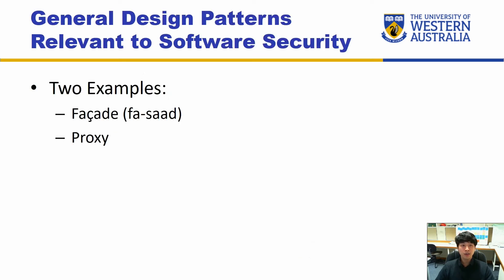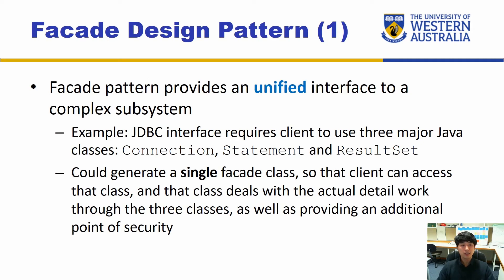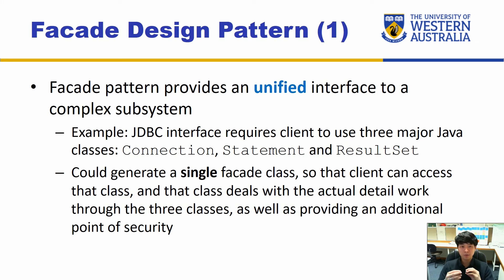With those architectural patterns in mind, we also have general design patterns that can be applied in various parts of the system. Two examples include facade and proxy. The facade design pattern provides a unified interface to a complex subsystem. This may seem backwards to distrustful composition, but depending on the system, it may be better to restrict access to individual components. In distrustful composition you separate large chunks of application, but with facade you group those separated functionalities together and provide a simple interface to access.